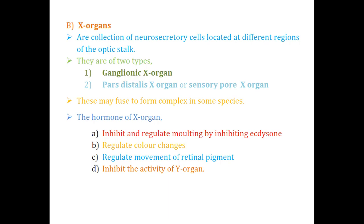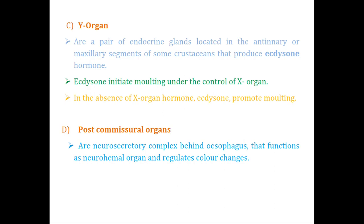The main functions of hormones secreted by the X-organ are: first, inhibiting and regulating molting by inhibiting the activity of ecdysone — ecdysone being the hormone secreted by the Y-organ; second, regulating color change (chromogenic regulation); third, regulating the movement of retinal pigment; and fourth, inhibiting the activity of the Y-organ. Since the X-organ hormone inhibits molting by inhibiting ecdysone, which is secreted by the Y-organ, it is effectively inhibiting the activity of the Y-organ.